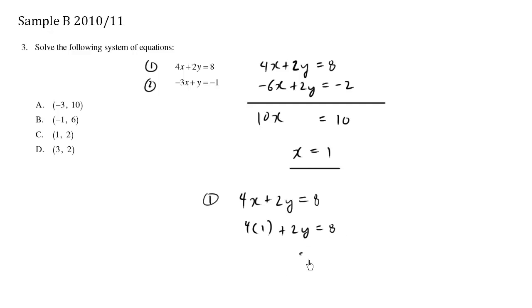We have 2y equals 8 minus 4, which is 4. So divide both sides by 2. Y equals 2. So the point we have is x is 1 and y is 2.